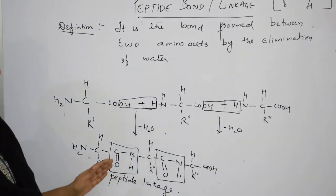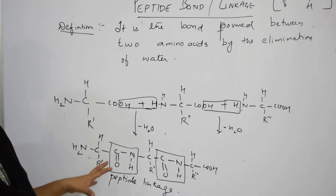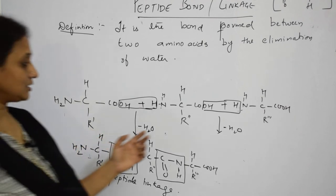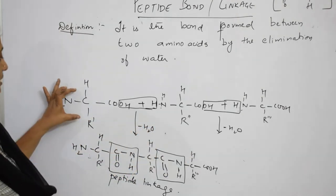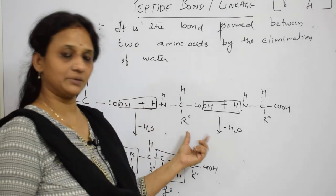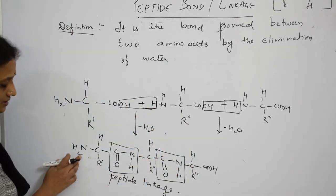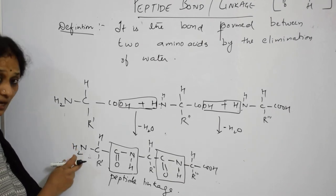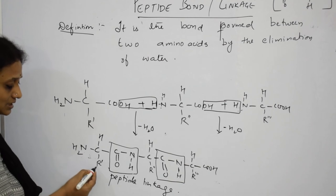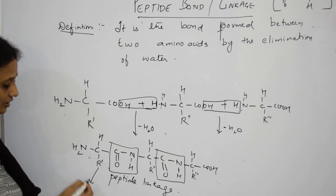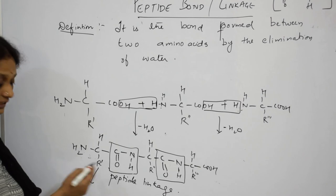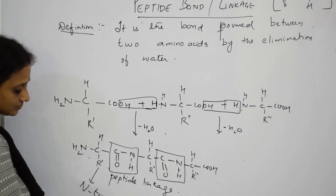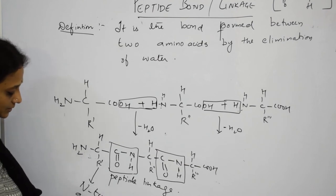Looking into the details of this peptide linkage: using R prime and double-dash notation to distinguish amino acids, observe which end the chain ends with. If it ends with the amino terminal, we call that the N-terminal amino acid. So the amino acid ending with the amino group is called the N-terminal amino acid.